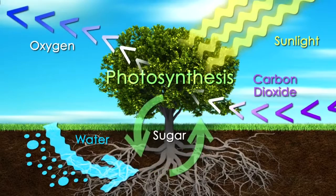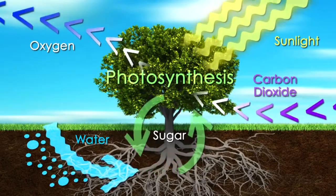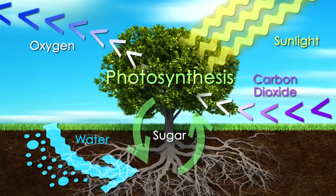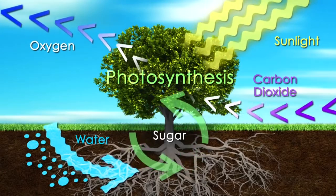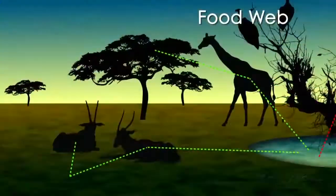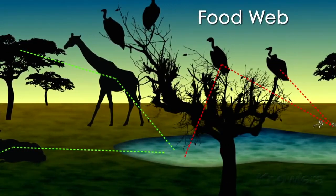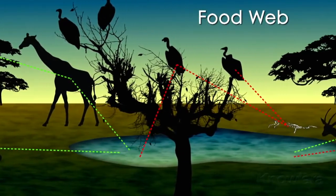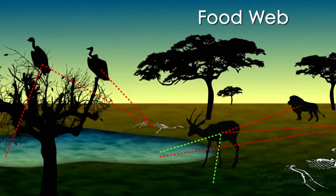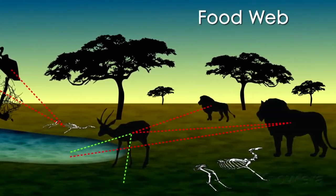Ecosystems need energy. In most cases, this energy comes from sunlight. Producers, like plants, take light energy and convert it into usable sugar energy through photosynthesis. As animals consume the energy from plants, they are eaten by other animals and ultimately decompose back into the soil. The energy moves through the ecosystem via a food web.